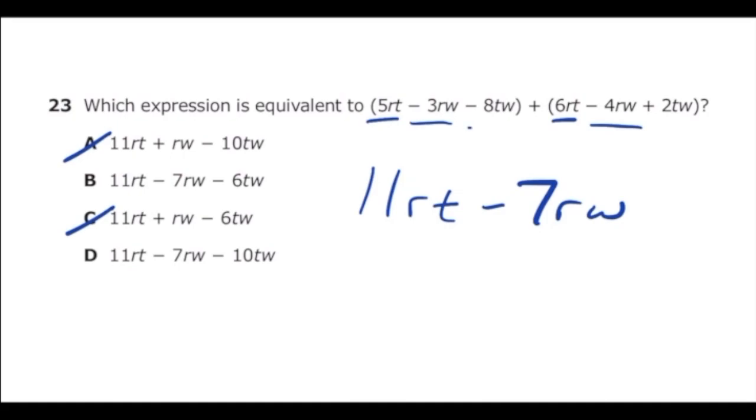Then negative 8TW plus positive 2TW is going to be negative 6TW. And so our correct answer has to be letter B.